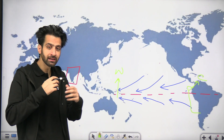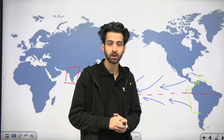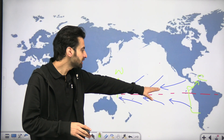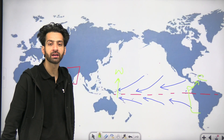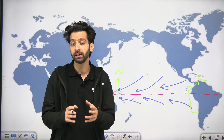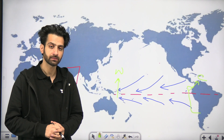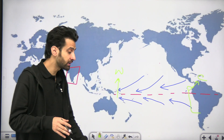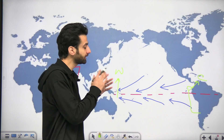Now, imagine this normal pattern is disrupted. That is the case of El Niño. During El Niño years, the trade winds are not strong enough to drive the water from the South American coast towards the Australian coast. Because of that, there is no warm water accumulation near the Australian coast. That is why during El Niño years, you will see more rain near the Peru-Chile coast and less rain or drought-like conditions near the Australian coast.